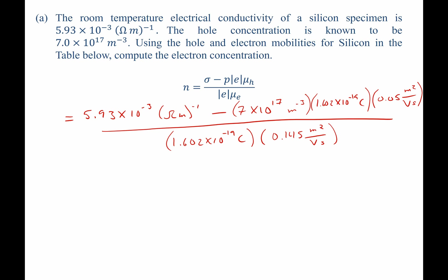When I punch these into the calculator, I find that the concentration of electrons should equal 1.39 × 10^16 per meter cubed.